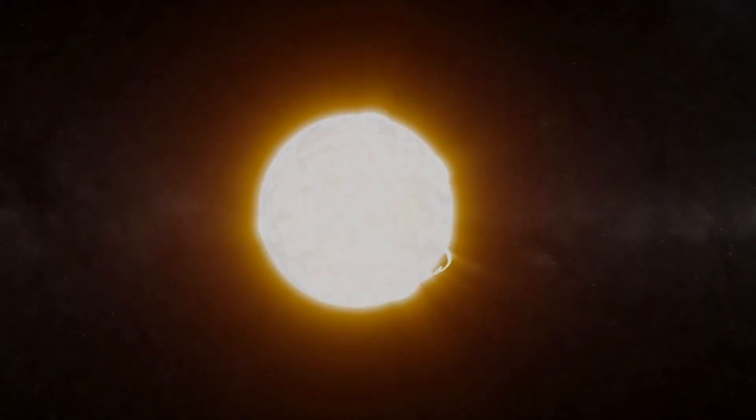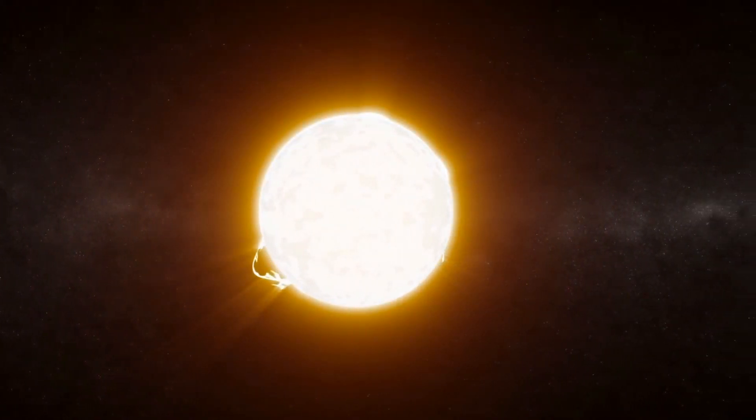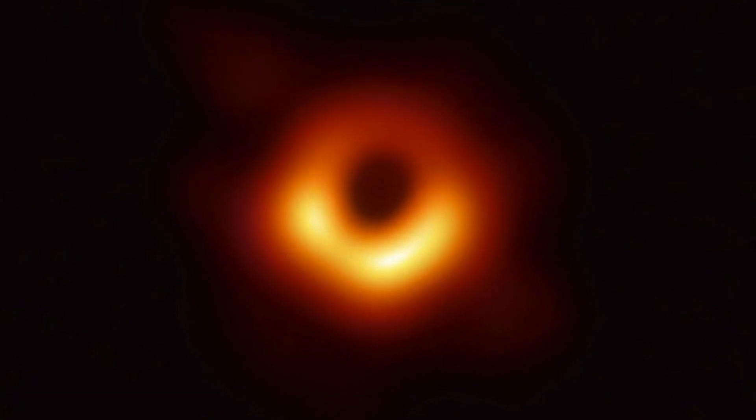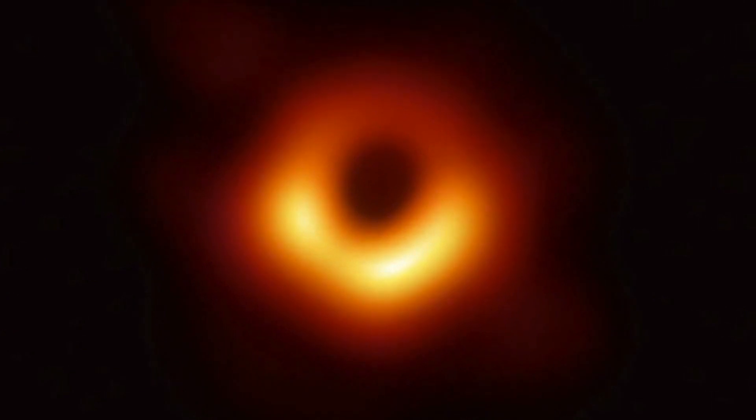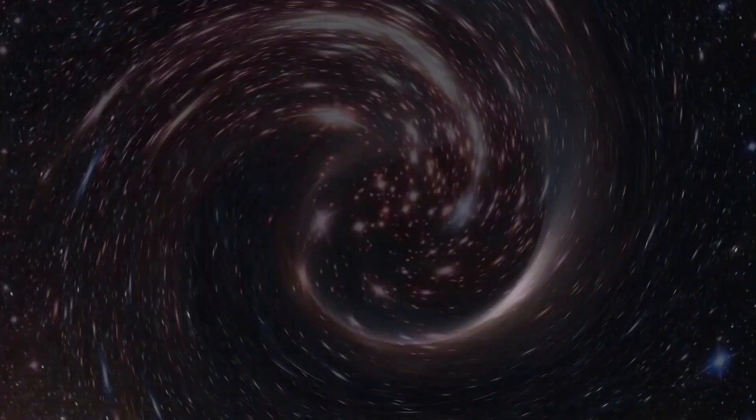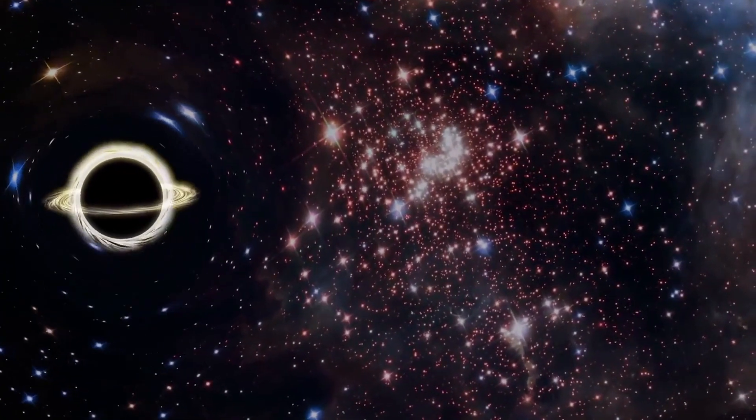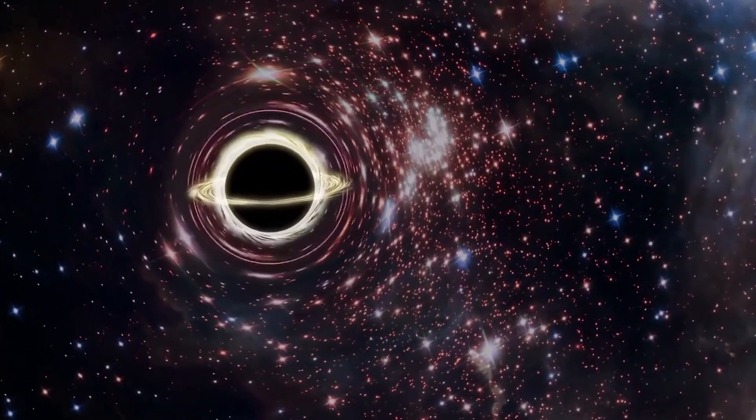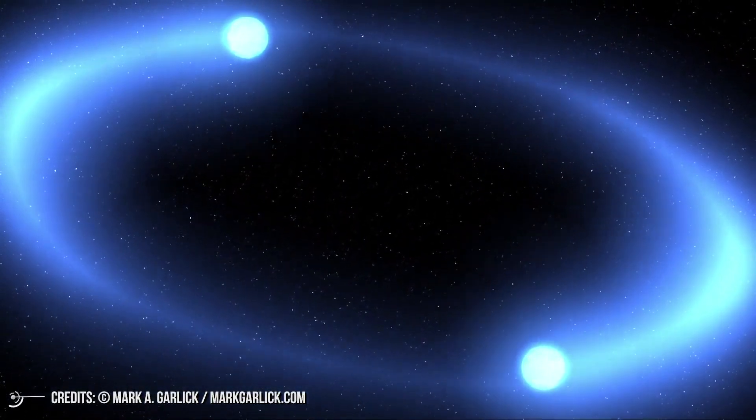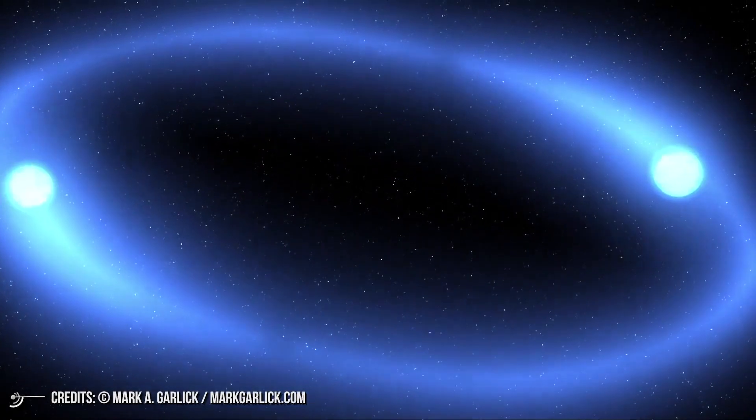With time, researchers expect to image other black holes and build up a repository of what the objects look like. The next target is likely Sagittarius A, which is the black hole in the center of our own Milky Way galaxy. Sagittarius A is intriguing because it is quieter than expected, which may be due to magnetic fields smothering its activity. Another study showed that a cool gas halo surrounds Sagittarius A, which gives unprecedented insight into what the environment around a black hole looks like.